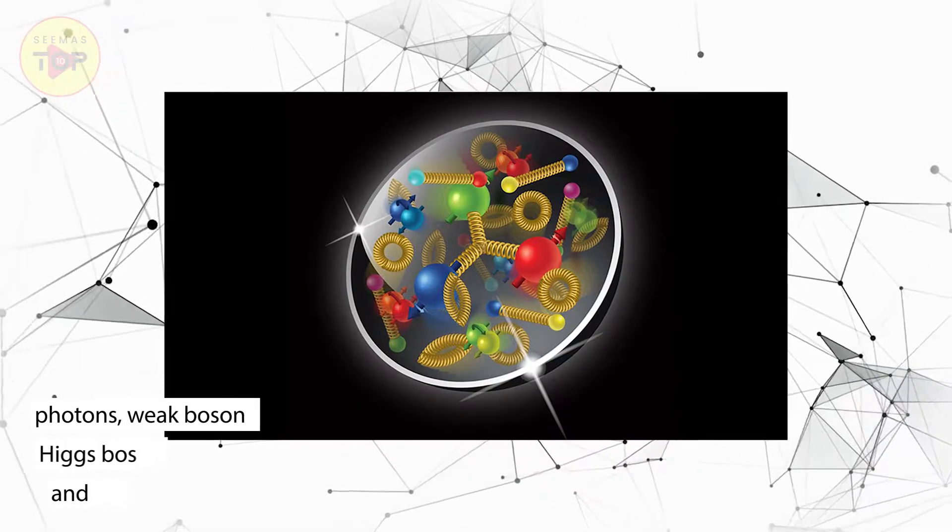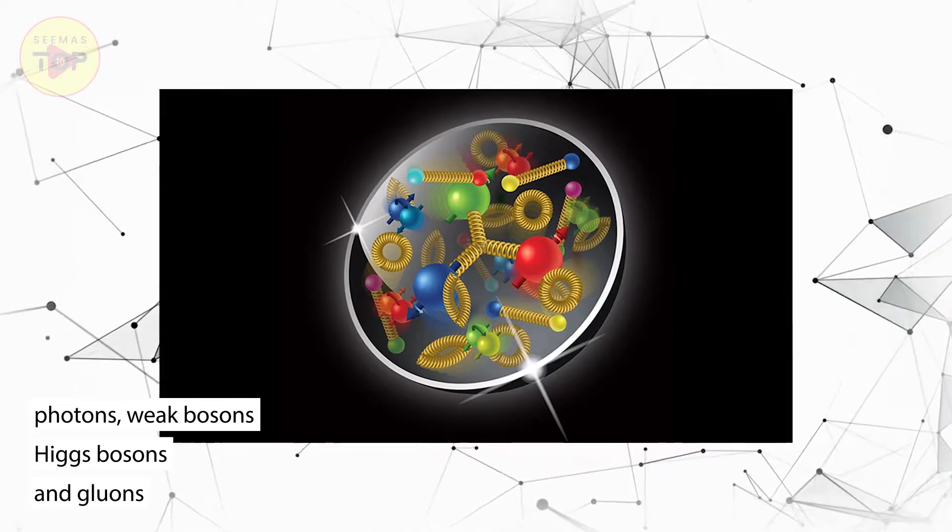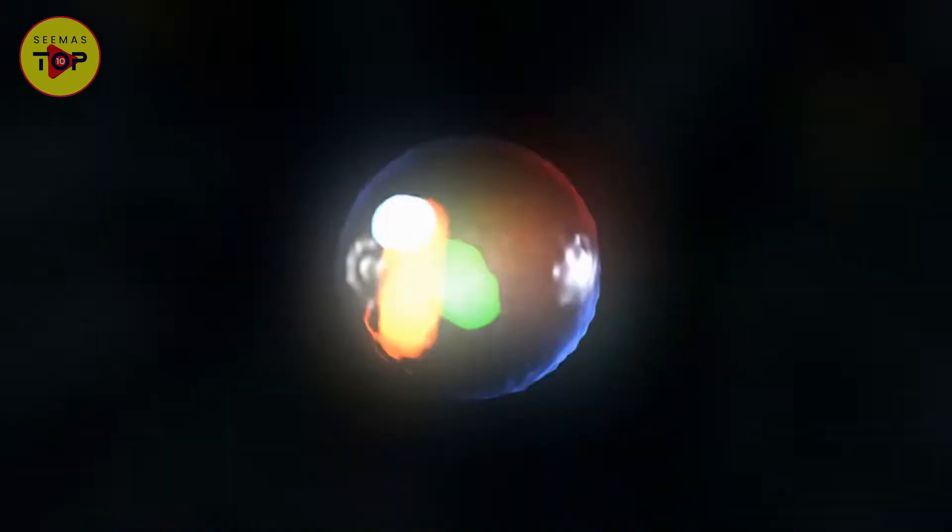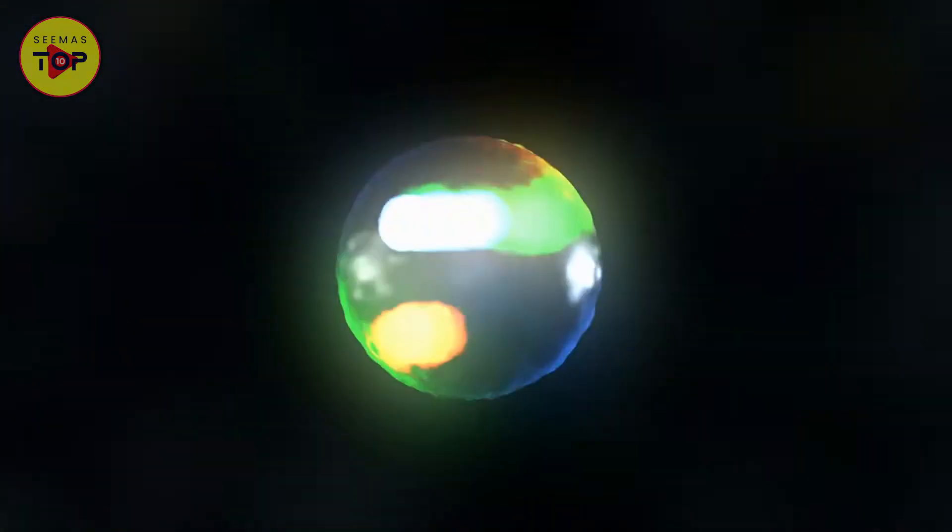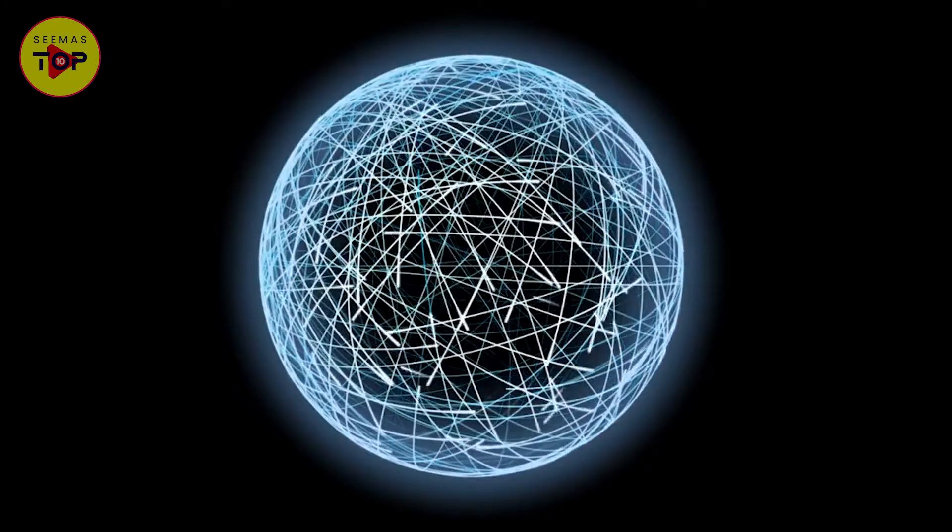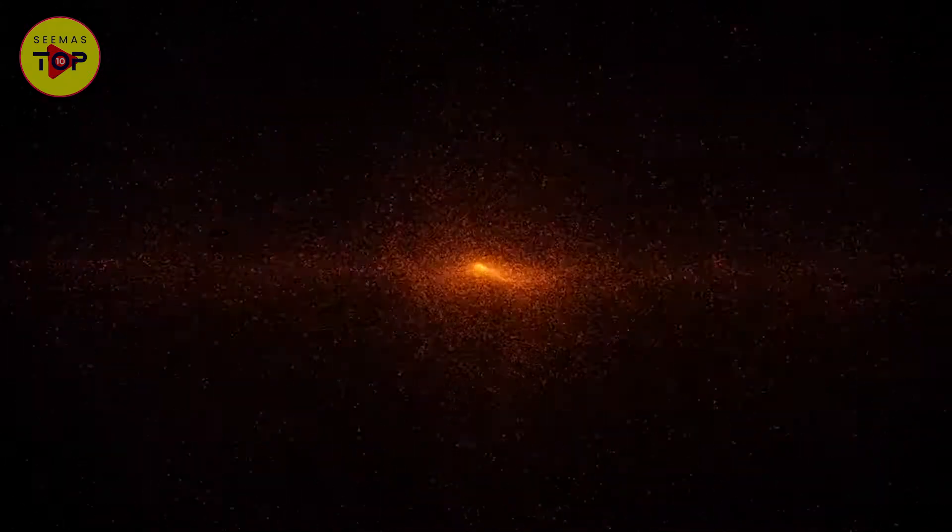These particles include leptons, photons, weak bosons, Higgs bosons and gluons. And there aren't just a few quarks lying around each proton. Instead, protons contain a sea of all these particles. And the more energetically you look inside, the denser the sea appears to be.